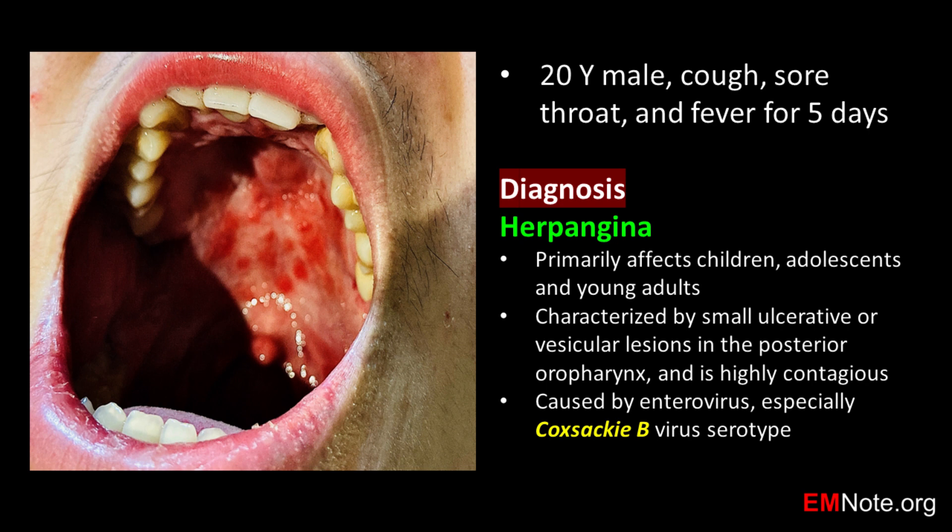The symptoms of herpangina include a high fever and blister-like sores in the mouth and throat, which can be painful. The illness is similar to hand, foot, and mouth disease and is most common in the summer and fall months.